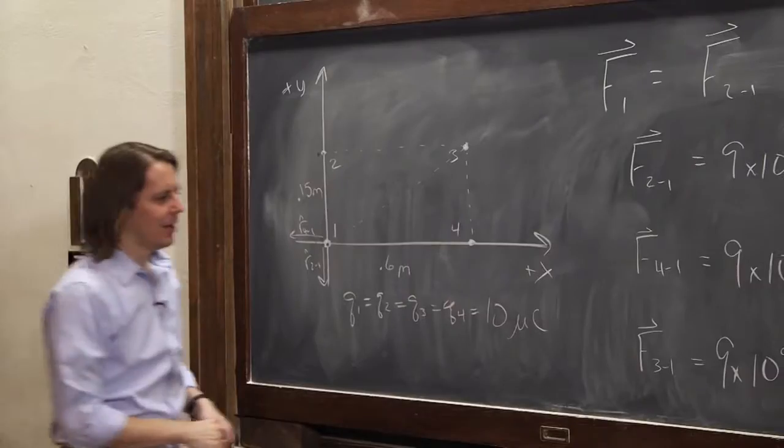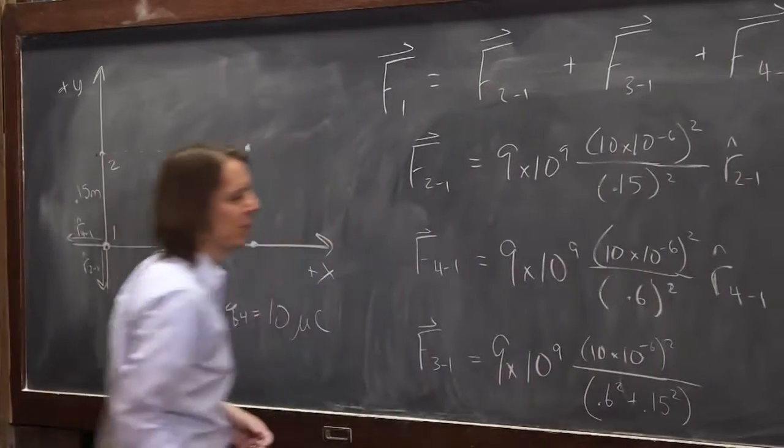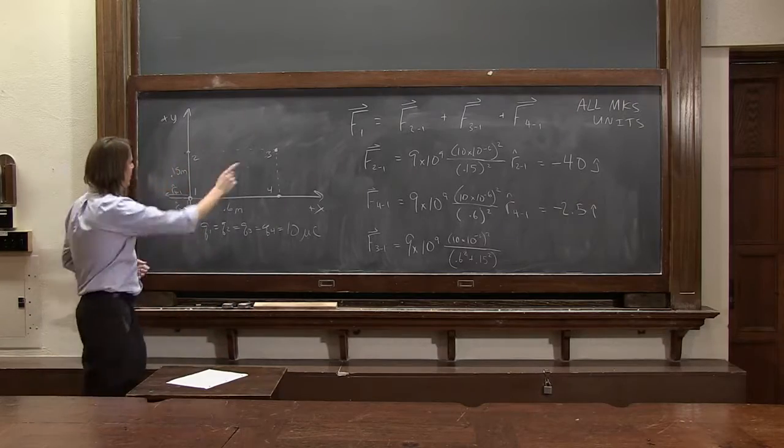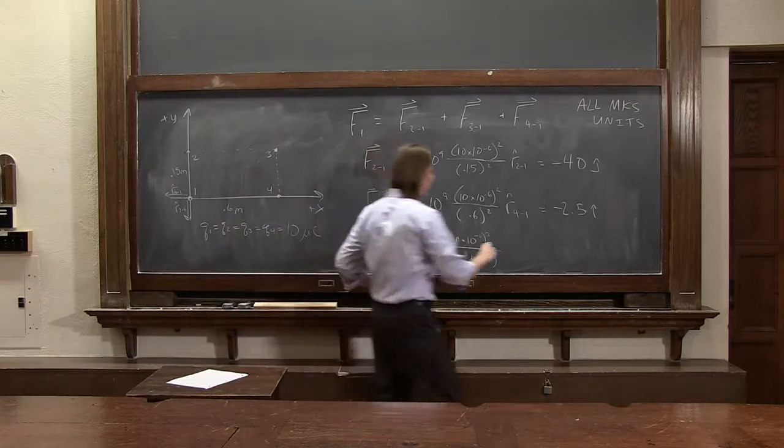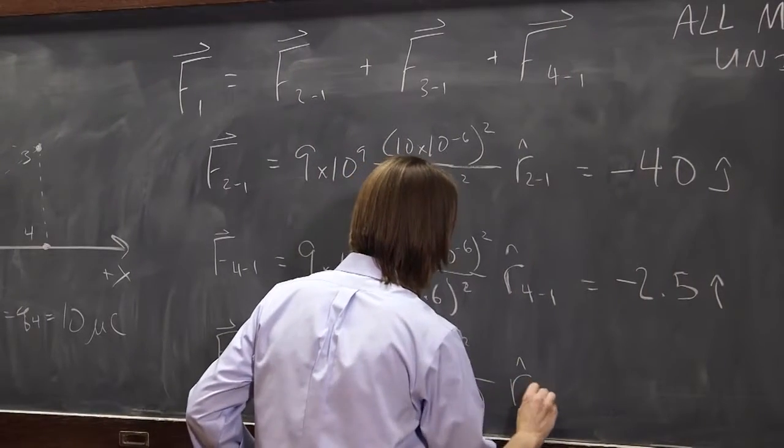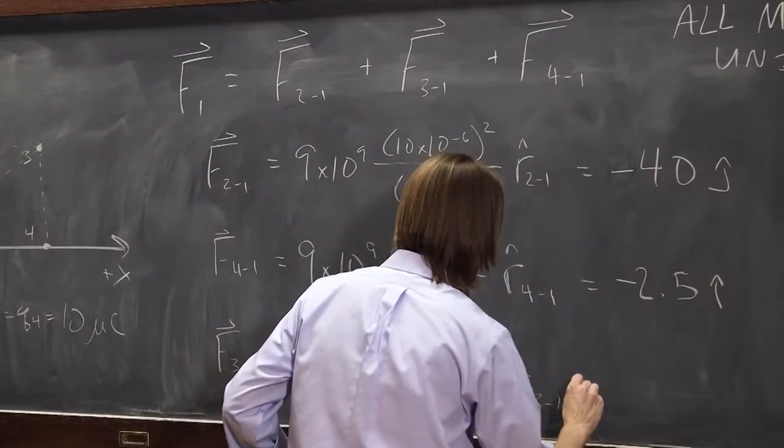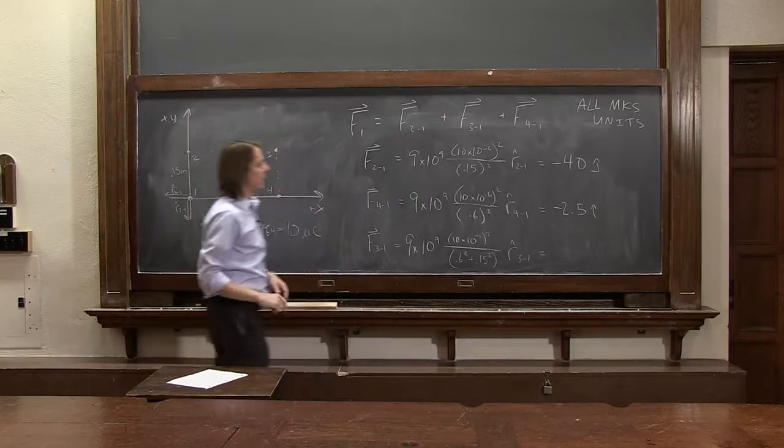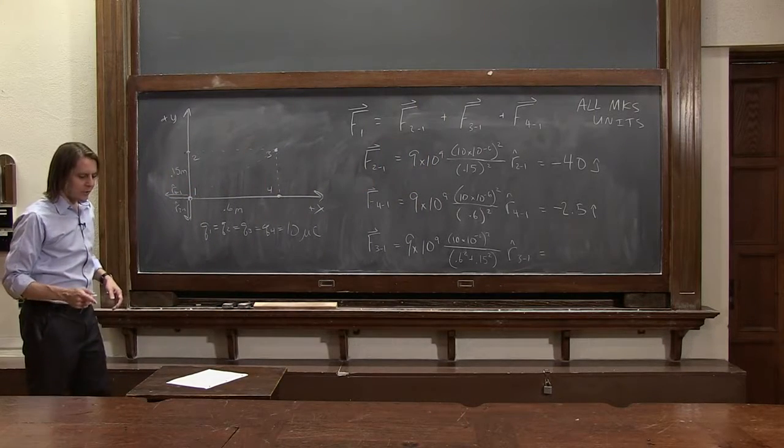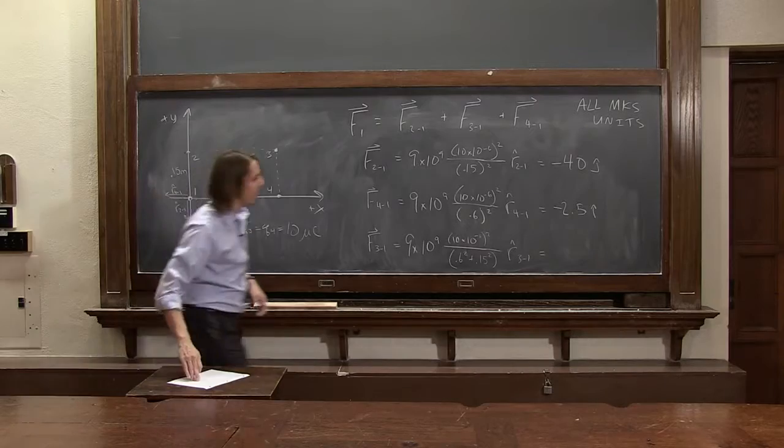I'm not going to square root it and then square it, because I'm running out of room. But this is 0.6 squared plus 0.15 squared in the bottom. And it's r hat 3,1. So the magnitude of that one is 2.35 newtons.